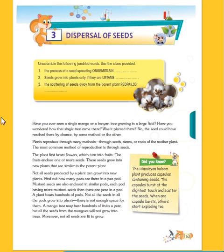Have you ever seen a single mango or another tree growing in a large field? The plants reproduce through many methods — through seeds, stems, and roots of the mother plant. We can put seeds in soil, cut stems, and use roots as methods for growing new plants.